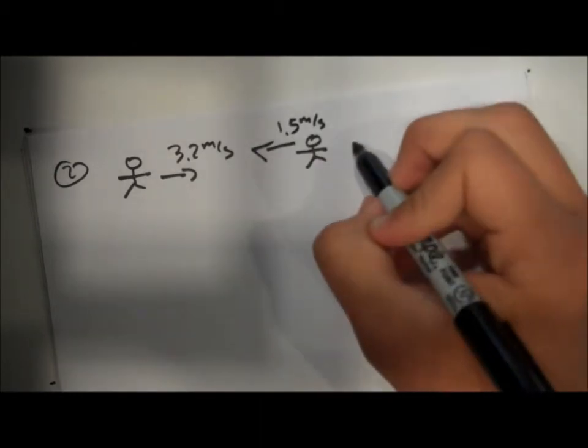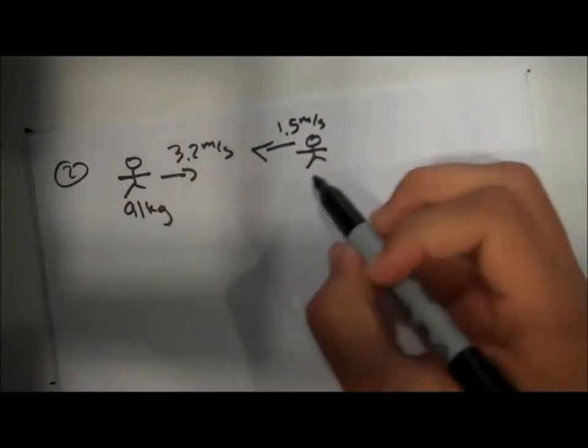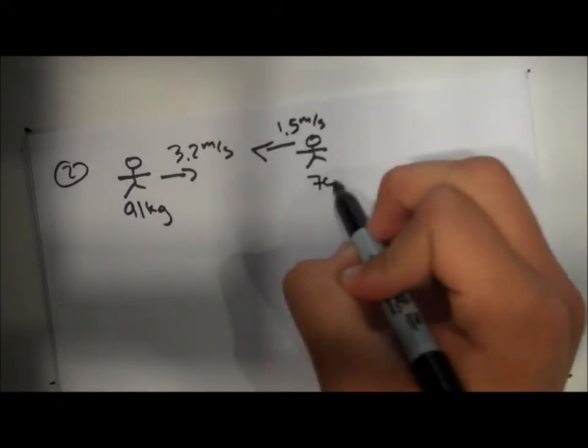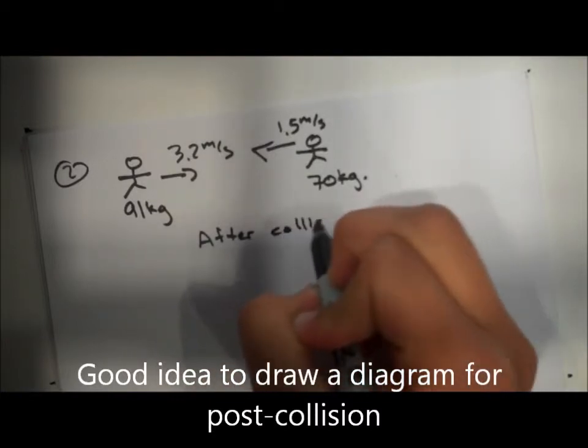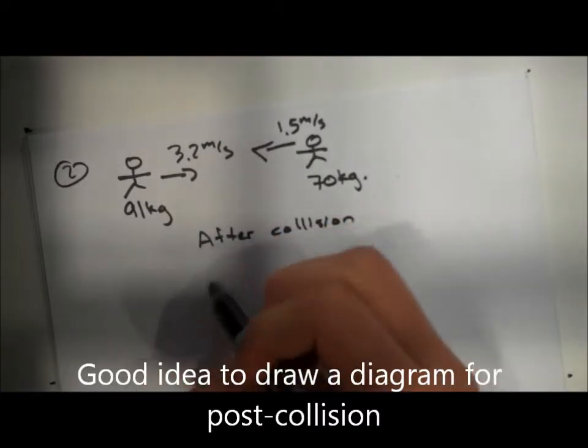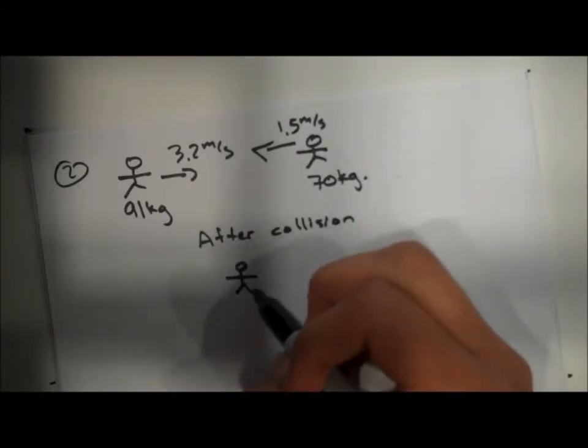Now the initial velocities: Austin is running with his star power at 3.2 meters per second while the puka is a little slower at 1.5 meters per second. Austin is 91 kilograms and the puka is moving 70 kilograms including himself and the weight of the shell.